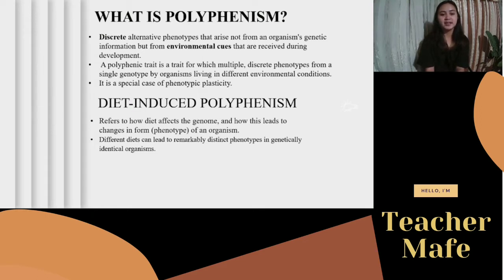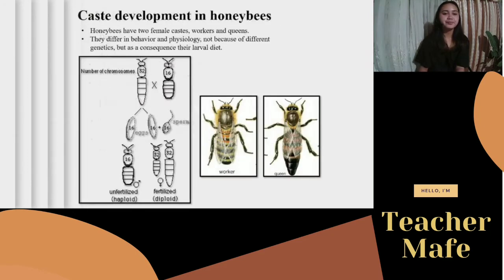From the word 'diet,' it refers to how diet affects the genome and how this leads to changes in form, or the phenotype, of an organism. We will use the caste development in honeybees as an example for diet-induced polyphenism.